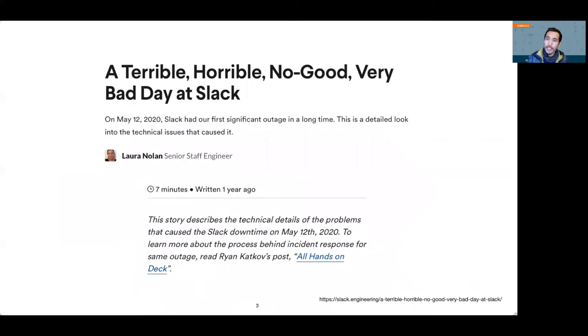An example of observability in action occurred on May 12 when Slack experienced one of its largest outages. Although to the user the outage lasted 48 minutes, triggering the issue, finding it, diagnosing it, and resolving it was a process that lasted more than eight hours and involved sifting through petabytes of data.